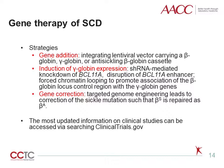Currently, there are three strategies for gene therapy for sickle cell disease. First, gene addition — integrating a lentiviral vector carrying a beta-globin, gamma-globin, or anti-sickling beta-globin cassette. The second strategy is to induce the expression of the gamma-globin gene by using shRNA-mediated knockdown of BCL11A, disruption of the BCL11A enhancer, or chromatin looping to promote association of the beta-globin locus control region with the gamma-globin genes. The third approach is gene correction — direct correction of the sickle mutation by using targeted genome engineering methods. Several clinical trials for SCD therapies are currently open.